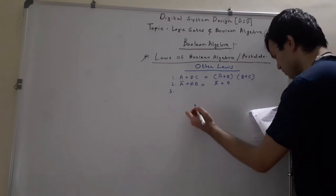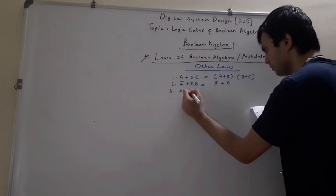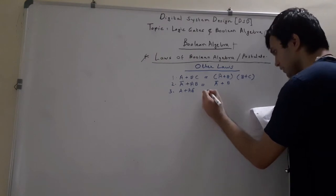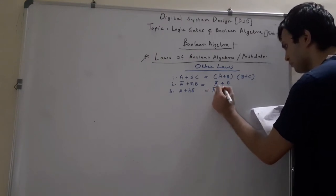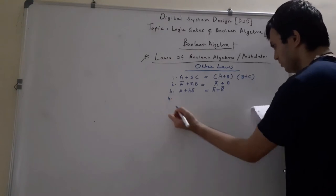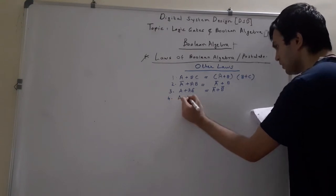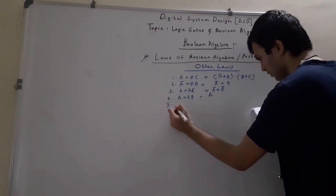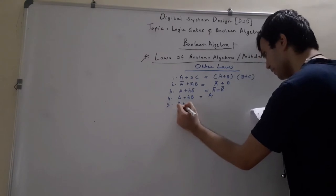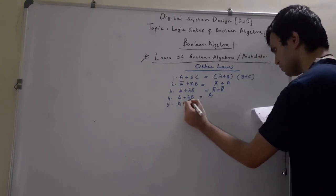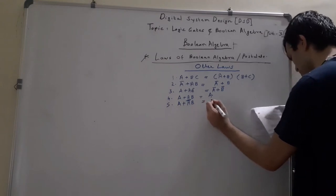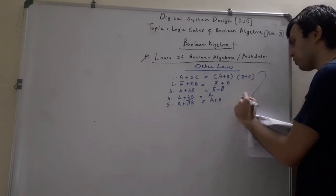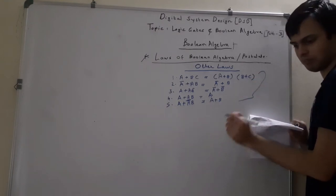Then we have the law A plus AB̄. When you have A plus AB̄, you can write it simply as A. And when you have A plus ĀB, you can write it as A plus B. So these laws, along with the other laws, are to be used for simplification of the system equation or Boolean equation.